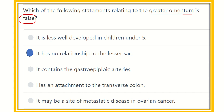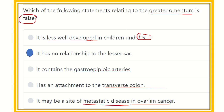The other options are all true: it is less well developed in children under five — true; it contains gastroepiploic arteries — true; it has an attachment to the transverse colon — true; it may be a site of metastatic disease in ovarian cancer — true. So the false statement is that the greater omentum has no relationship to the lesser sac, because it communicates with the lesser sac via the epiploic foramen.